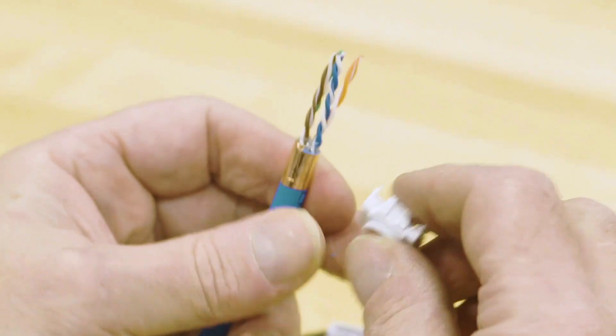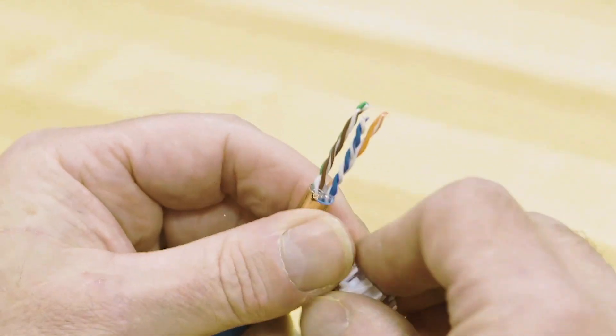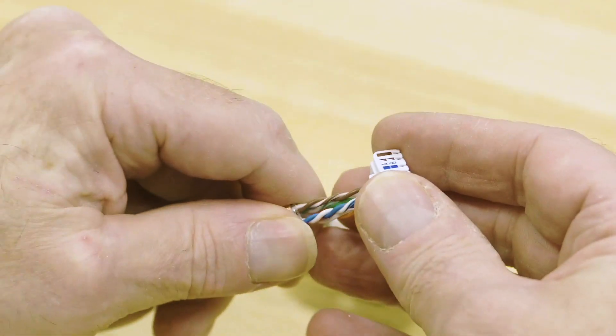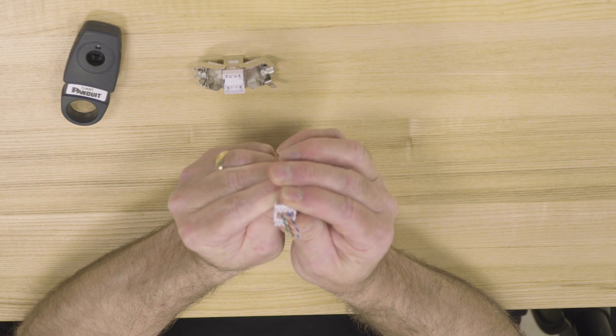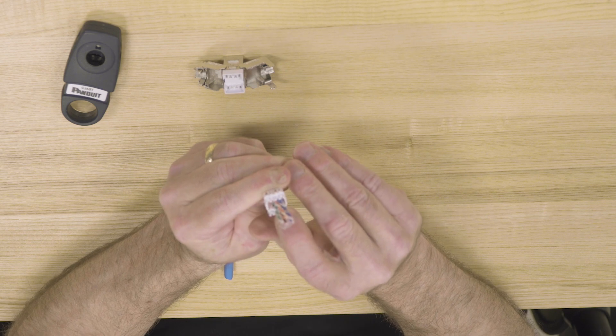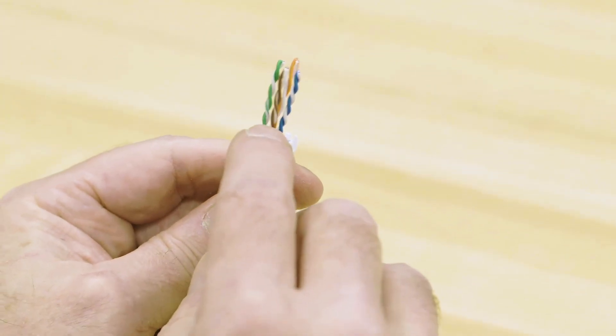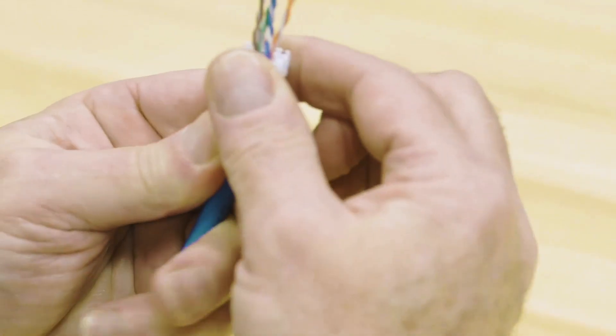Since I have my blue and brown conductors facing me, I'm going to insert the conductors and jacket just far enough so the top of the jacket comes to the top of the wire cap.